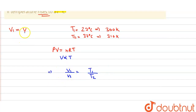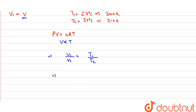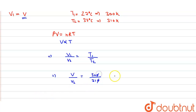We have the value of V1 as V, so putting in the values: V upon V2 equals 300 upon 310. We can cancel the zeros, and by this we get V2 is equal to 31 upon 30 times V.